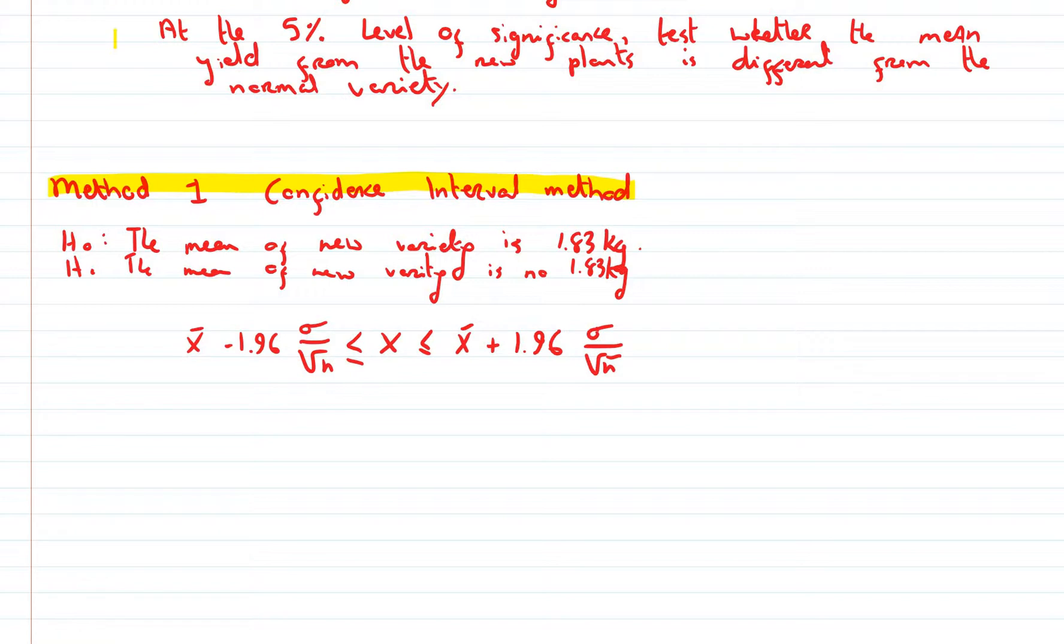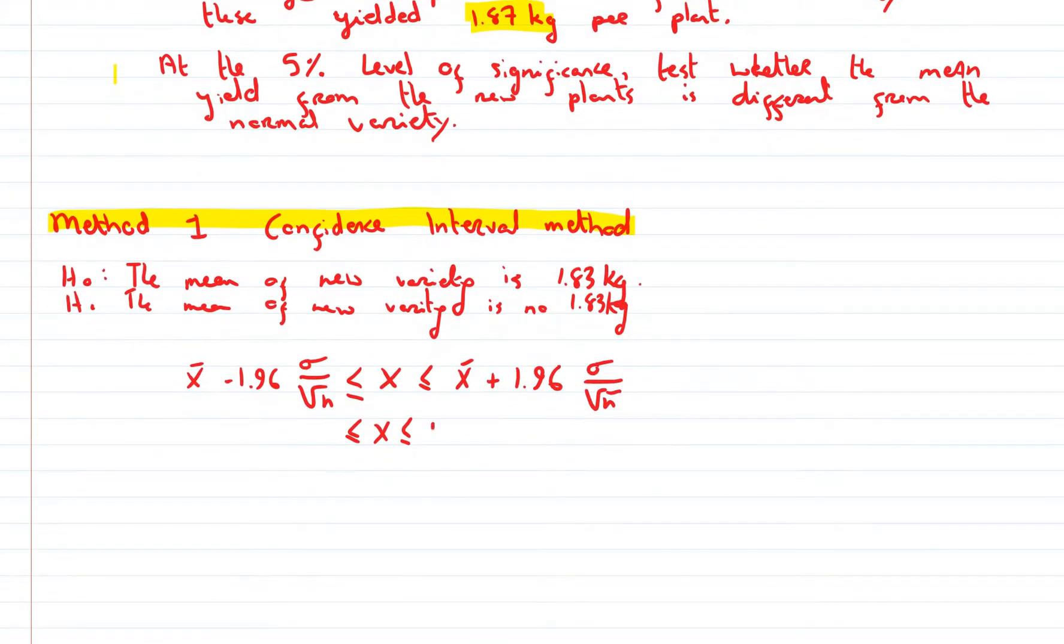We would have been using this in the confidence interval already. So the real mean lies somewhere between our mean, which is 1.87. When I say our mean, I mean the mean of these new tomatoes.